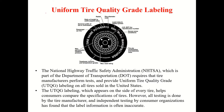There is something called Uniform Tire Quality Grade labeling, known as UTQG. The National Highway Traffic Safety Administration, part of the Department of Transportation, requires that tire manufacturers perform tests and provide UTQG labeling on all tires sold in the United States. The UTQG labeling appears on the side of every tire and helps consumers compare tire specifications, however independent testing has found that the label information is often inaccurate.